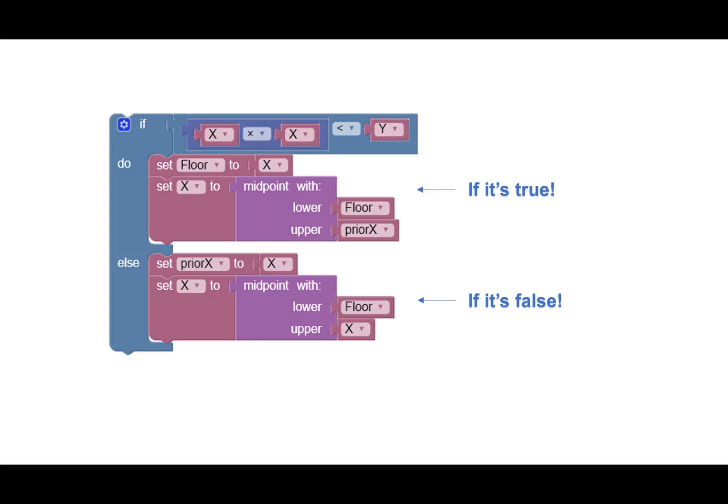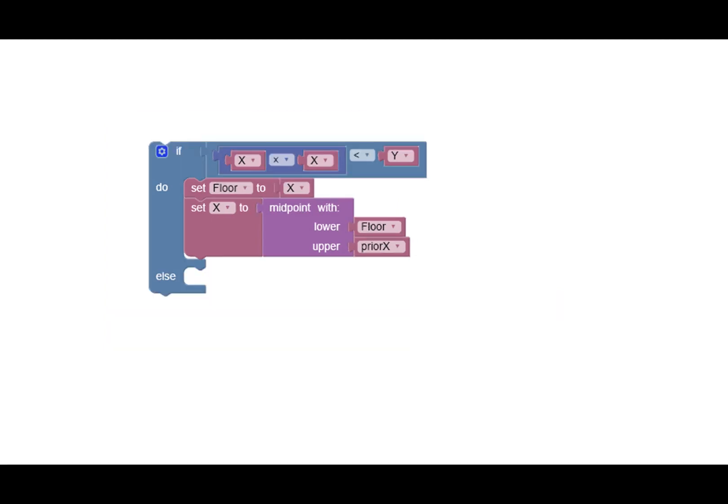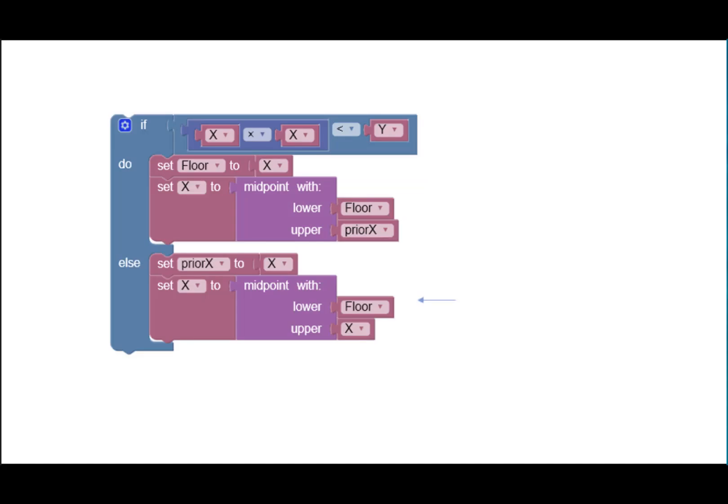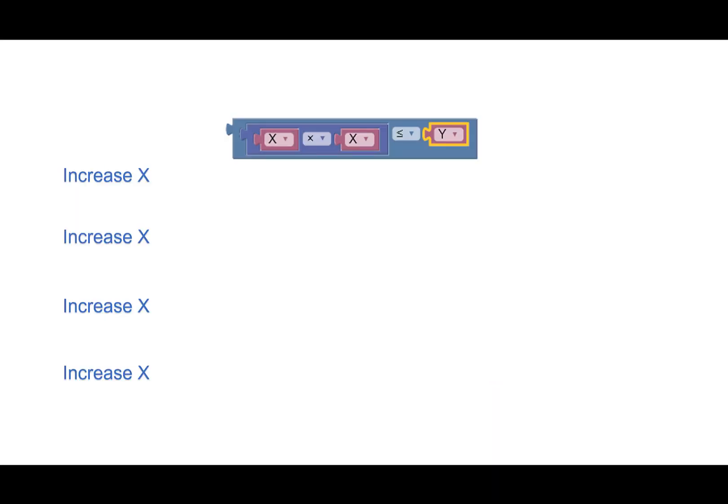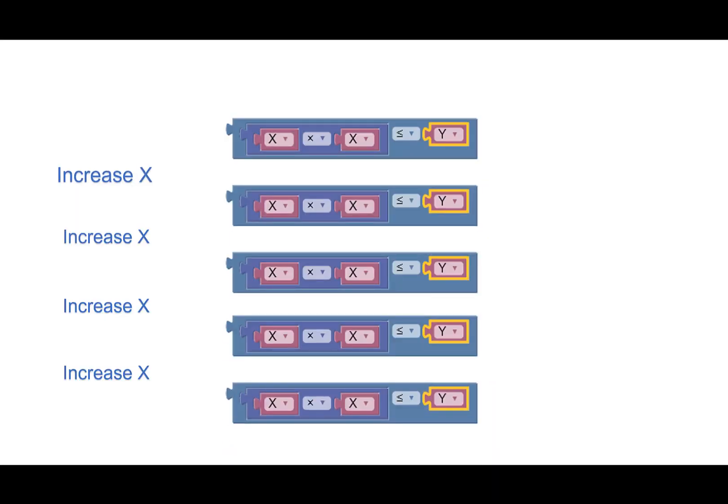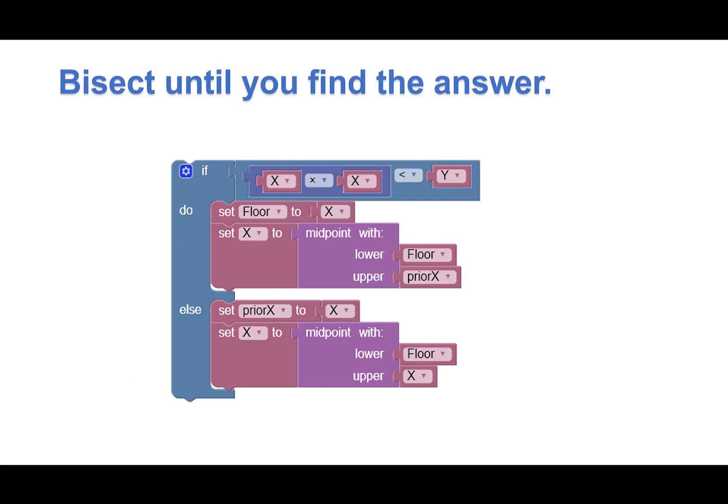So here's what we need to do if it's true. Set X to the midpoint of our new floor and the cached value of the prior X. And here's what we need to do if it's false. Meaning if X squared is greater than Y, bump prior X, and then find the midpoint of the floor and X. And this will repeat over and over again. Yes, it will bisect to find the midpoint until it finds the answer.